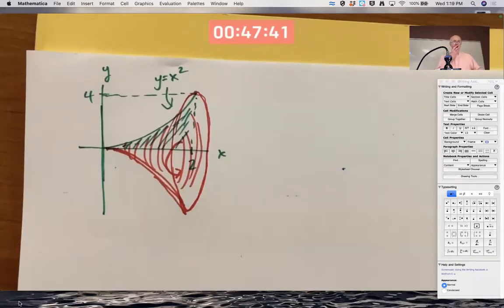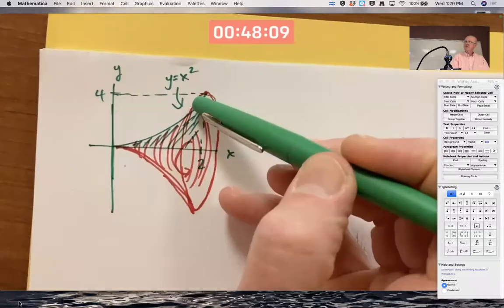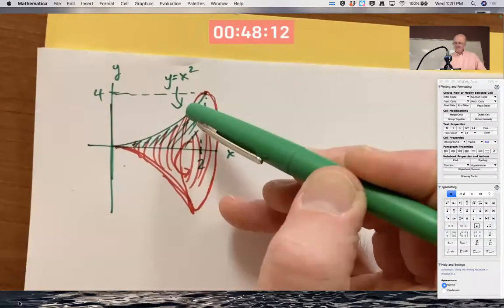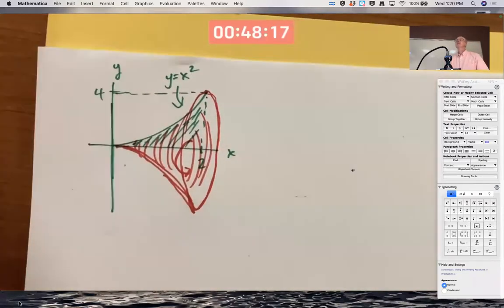What's our goal? Our goal is to find the volume of this thing. It's not a typical kind of cone. Like on Monday, we had a cone where the sides were straight. These sides are curved. The answer is not one-third pi r squared h. It's not that, because of the curvature of the sides here.